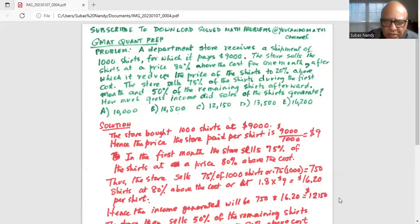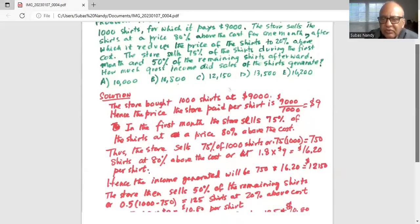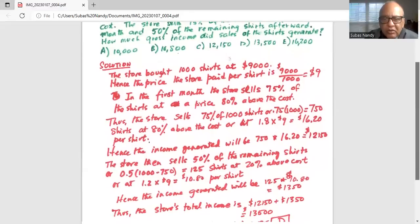In the first month, the store sells 75% of the shirts at a price 80% above the cost. Thus, the store sells 75% of 1,000 shirts, or 0.75 times 1,000 equals 750 shirts at 80% above the cost. The price is 1.8 times $9, which is $16.20. So 750 times $16.20 equals $12,150.